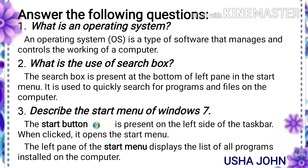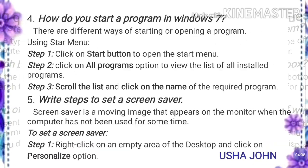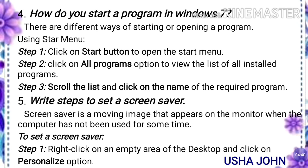Third one: describe the start menu of Windows 7. The start button is present on the left side of the taskbar. When clicked, it opens the start menu. The left pane of the start menu displays the list of all programs installed on the computer.